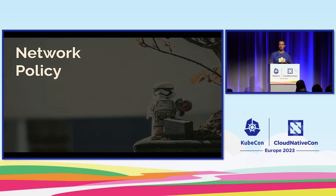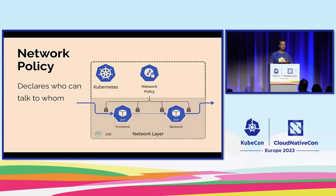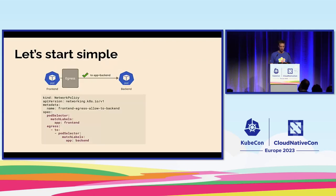Let's jump into the first demo and show you how to troubleshoot some problems. Let's start simple and use a very basic network policy example — because what could possibly go wrong there, right? In this simple example, we will have a frontend and a backend pod, and we'll apply a network policy that will look something like this. This is a Kubernetes network policy.